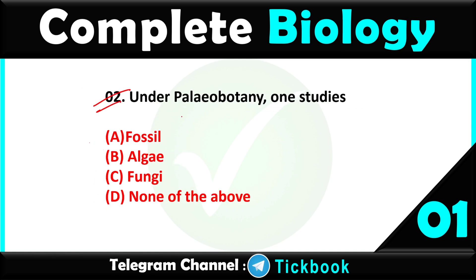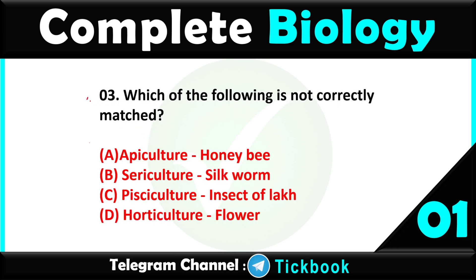Question number two: under paleobotany or paleontology one studies — option number A is the right answer: fossils. Question number three: which of the following is not correctly matched — option number C is the right answer: pisciculture — it is about fish.